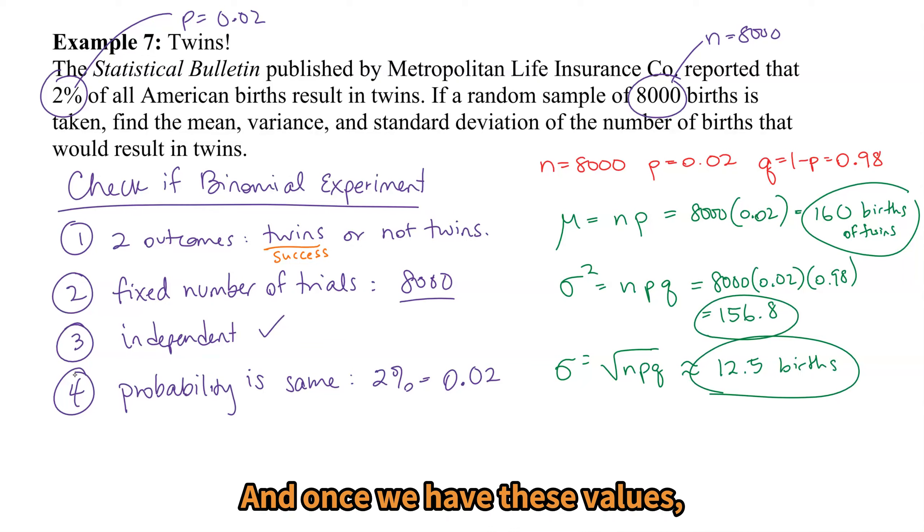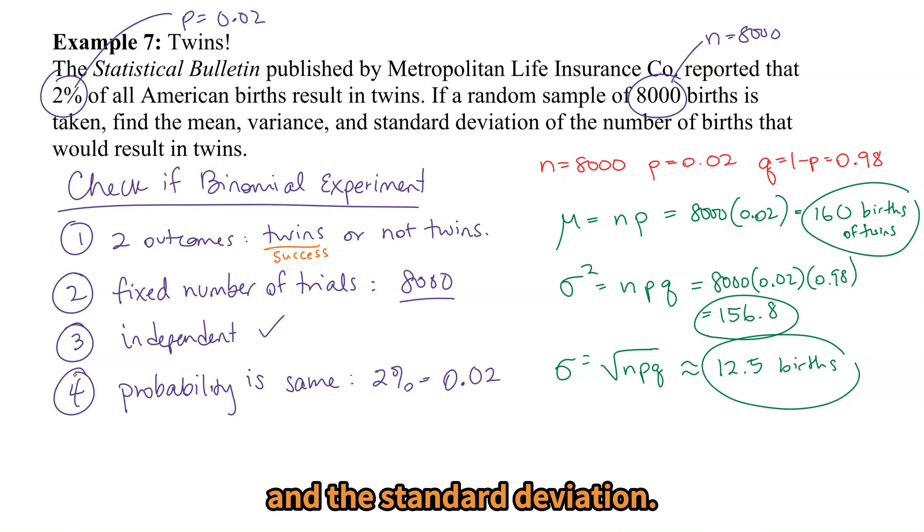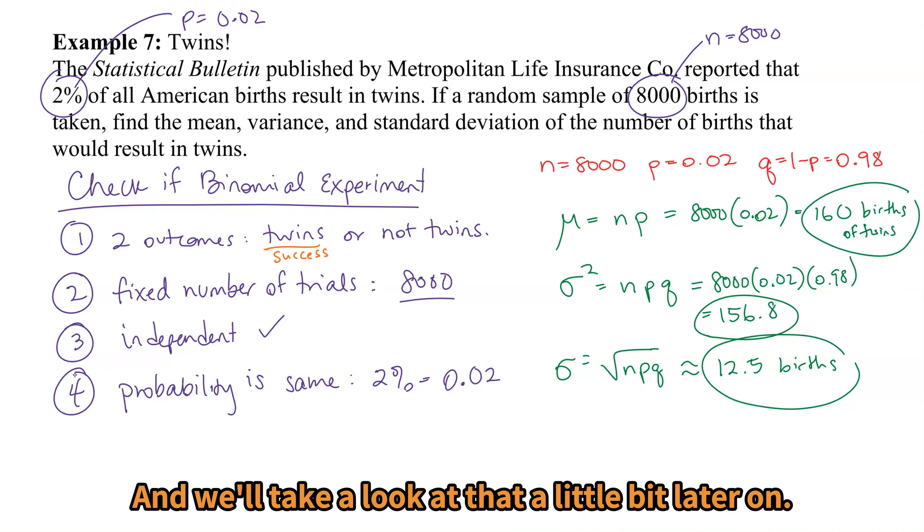And once we have these values, we could then talk about whether some value is an outlier or not. We can use the mean and the standard deviation. Any value that's more than three standard deviations away would be considered an outlier, and we'll take a look at that a little bit later on.